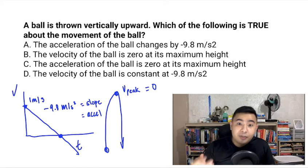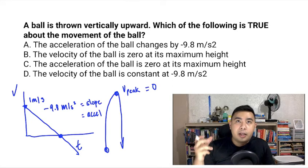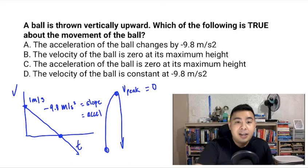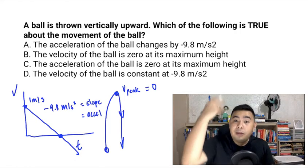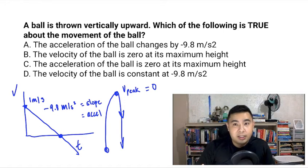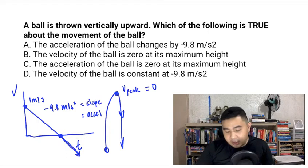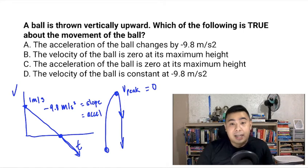And after it reaches its maximum height, the velocity now is going to be negative. It's going to be negative because it's going to be pointing downwards. It's going to be going down. So as we can see in the velocity time graph, it's going to be going down. So this is how you can analyze the velocity time graph as well.